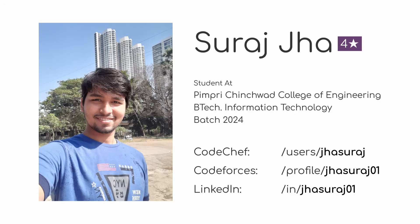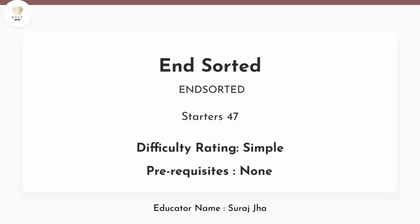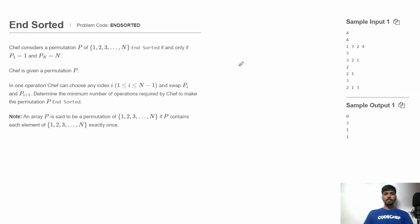Hello friends, welcome to CodeChef. This is Suraj and in this video let's discuss this problem N-sorted from Starters 47. Chef considers a permutation P of numbers from 1 to N. Chef calls this permutation N-sorted if and only if the first element is 1 and the last element is N. The numbers in between can be in any order.